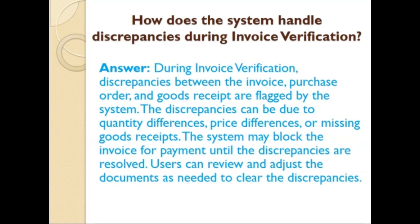How does the system handle discrepancies during invoice verification? During invoice verification, discrepancies between the invoice, purchase order, and goods receipt are flagged by the system. Discrepancies can be due to quantity differences, price differences, or missing goods receipts. The system may block the invoice for payment until the discrepancies are resolved. Users can review and adjust the documents as needed to clear the discrepancies.